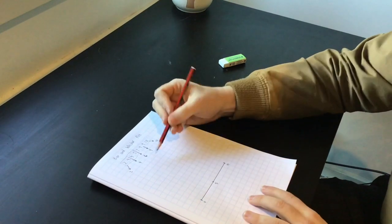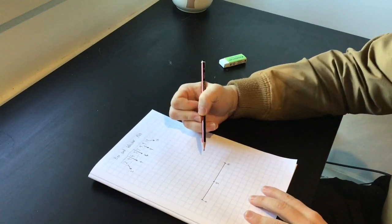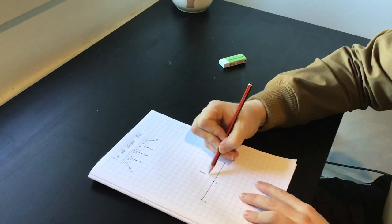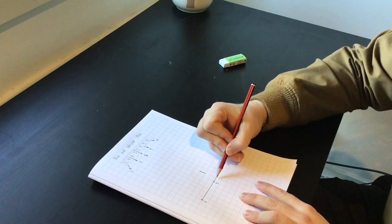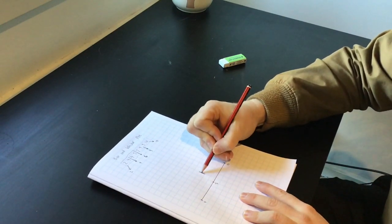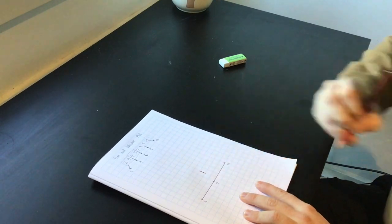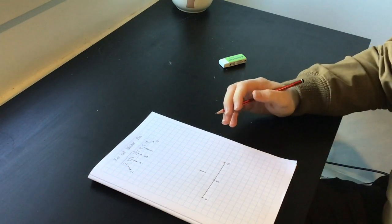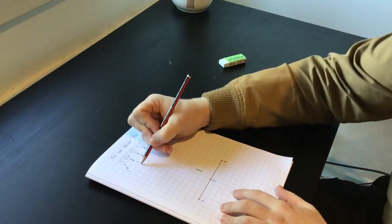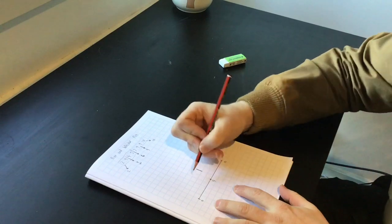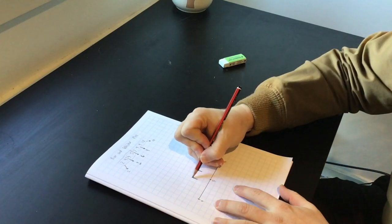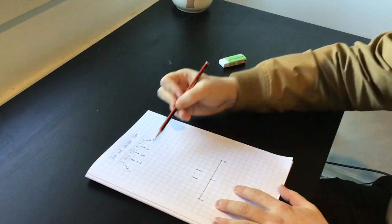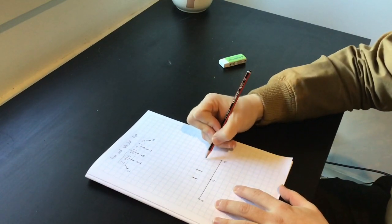Our first median is 6, so draw a line a couple of centimeters above the number line — not too close. That line at 6 is our median. We're going to create the box. The lower quartile median is 4, so put another line there using a ruler, nice and straight. And our upper quartile is 9, so place that line at 9.